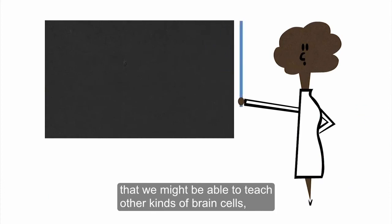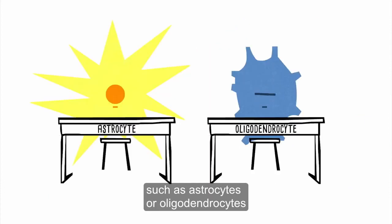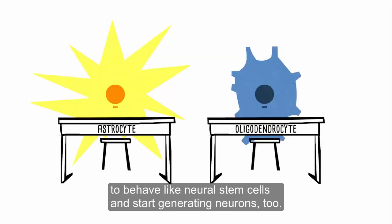They've also discovered that we might be able to teach other kinds of brain cells, such as astrocytes or oligodendrocytes, to behave like neural stem cells and start generating neurons too.